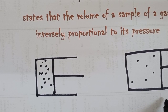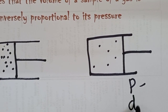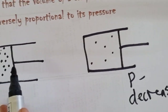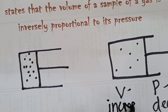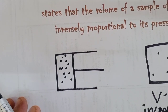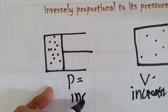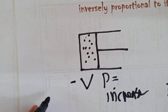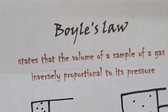I will repeat. If the pressure decreases, the volume increases. This is what we call inversely proportional. If the pressure increases, the volume decreases. That is how the principle of Boyle's Law is explained.